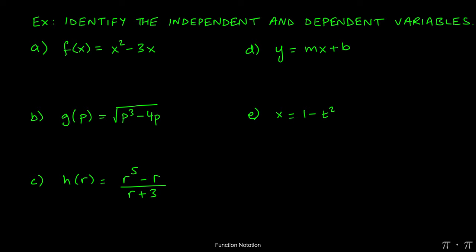For part a, f(x) equals x squared minus 3x. In this case, we see that the input variable is x and the output variable is f. As such, the independent variable is going to be x and the dependent variable is going to be f.